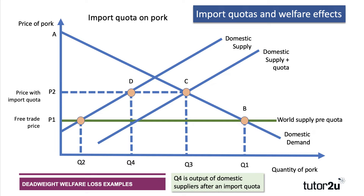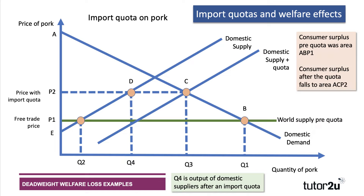Now let's think about the welfare effects. A quota artificially limits supply, drives the price up, encourages domestic supply, but discourages domestic demand. Before the quota, at the very low free-trade price P1, consumer surplus was area A, B, P1 — a lot of consumer surplus because pork could be imported very cheaply. After the quota, consumer surplus falls to area A, C, P2 — a fall of P2, C, B, P1 — so quite a big reduction in consumer surplus. An import quota will damage consumer welfare.